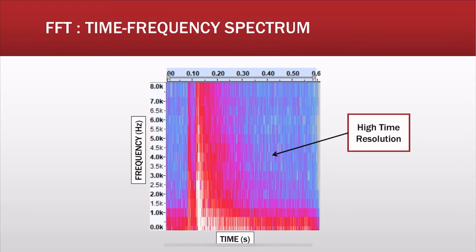Based on our window, we have high time resolution, which means we know at what time the signal occurred, but we don't have good information about the frequency. As you know, this is a trade-off: if you have high time resolution, you have poor frequency resolution.